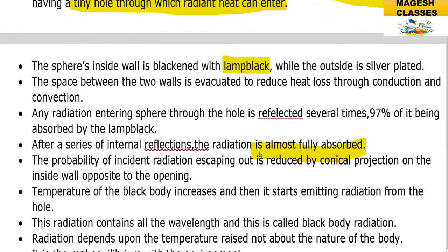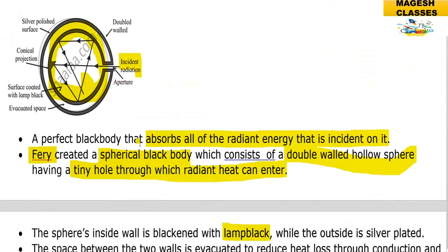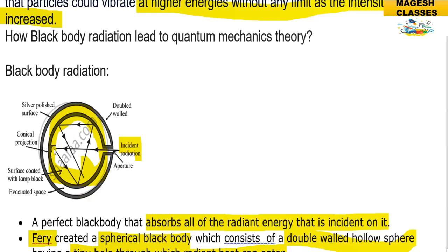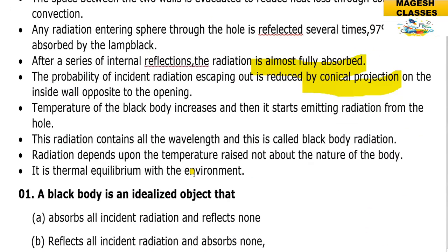A black body is a material that absorbs all of the radiant energy incident on it. The probability of incident radiation escaping out is reduced by a conical projection on the inside wall opposite the hole. This conical projection prevents radiation from escaping.